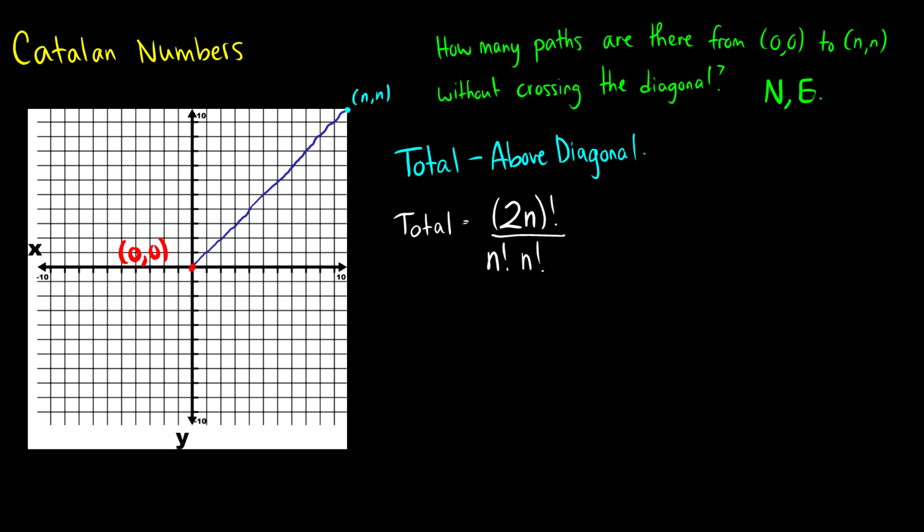Now, what about above the diagonal? What about this area right here? So I'm going to do something tricky here. What we're going to do is, well, first let's look at some of the paths we can take. We can go east, north, east, north, east, east, north, north.